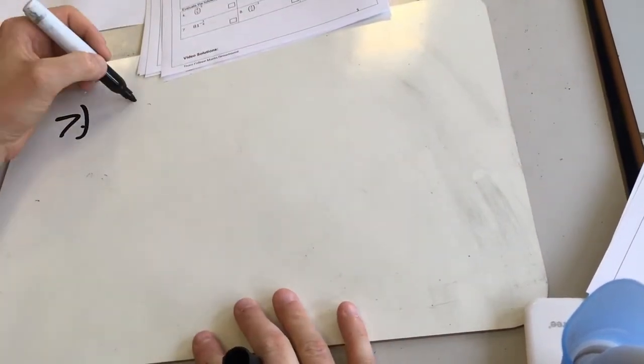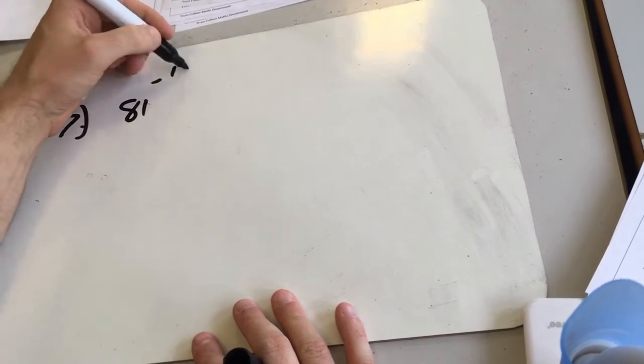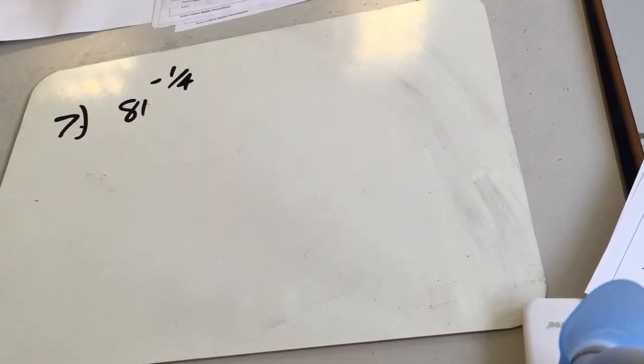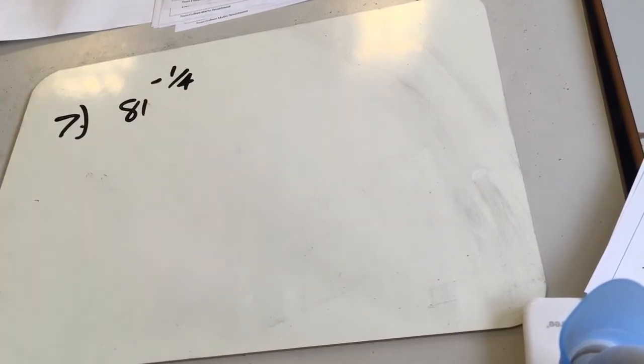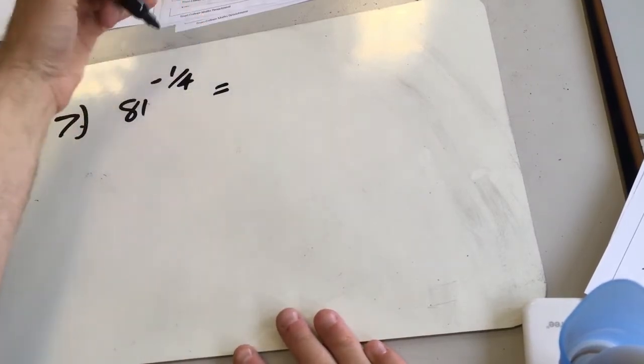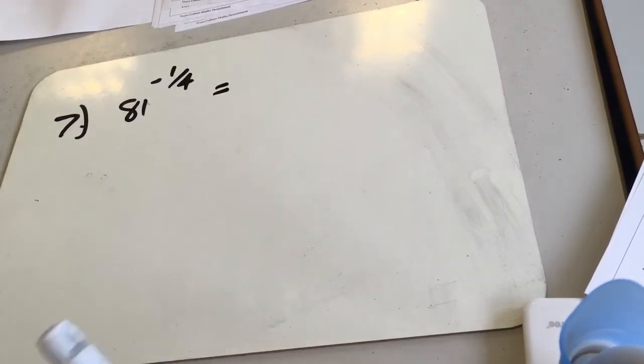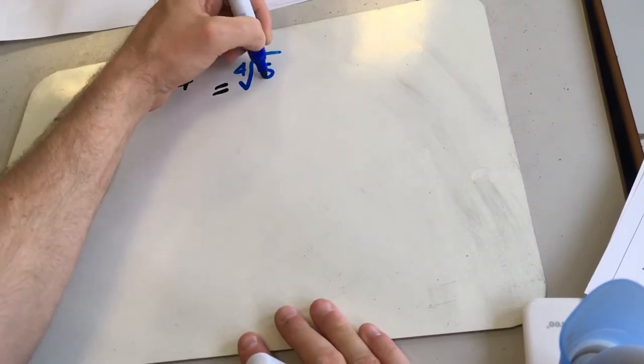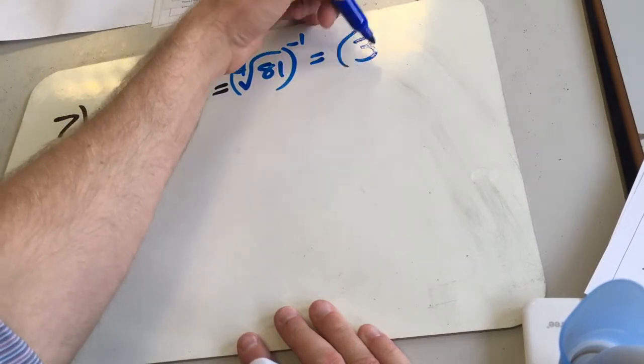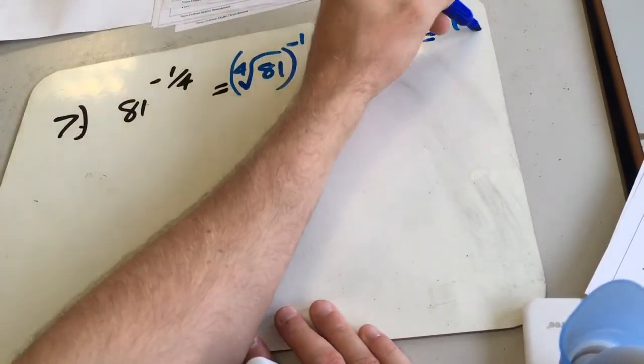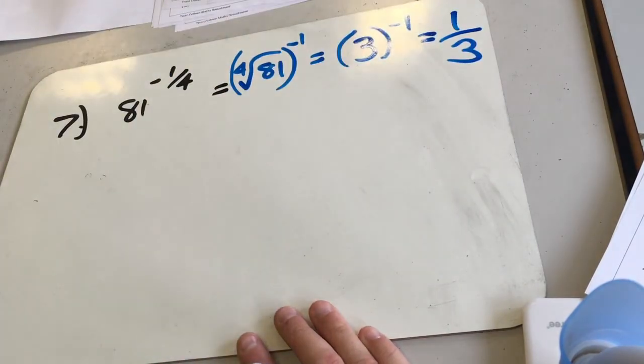All right, on to question 7. So question 7, we've got 81 to the power minus a quarter. So again, two parts of this one. We've got a minus sign to deal with and we've got this power of a quarter to deal with as well. Now the fourth root of 81 gives us 3, so 3 to the power of 4 is 81. So I can do that bit first and say it's going to be the fourth root of 81 all to the power minus 1. And the fourth root of 81 is 3, so we get 3 to the power minus 1, and 3 to the power minus 1 is 1 over 3, so a third for that one.